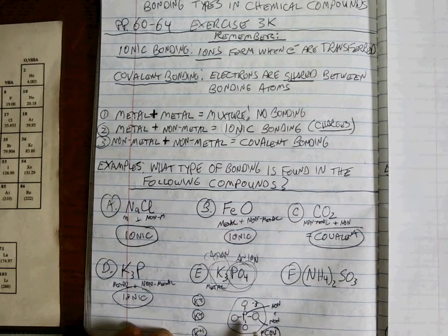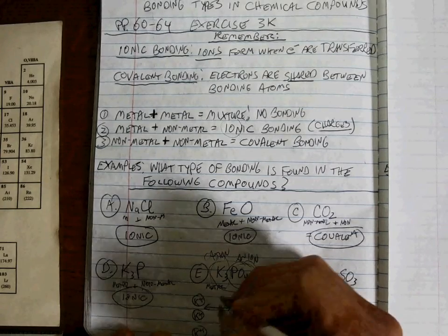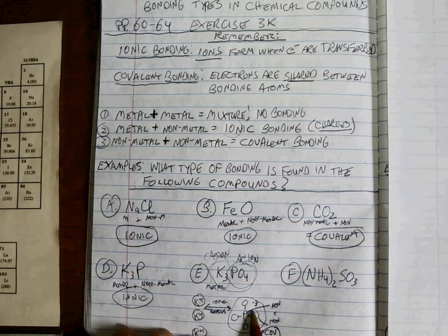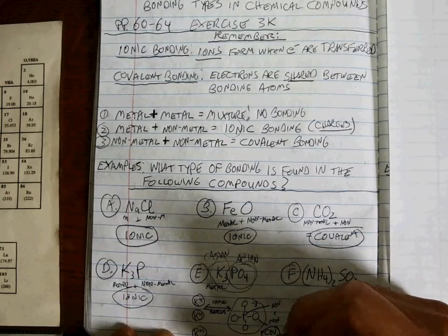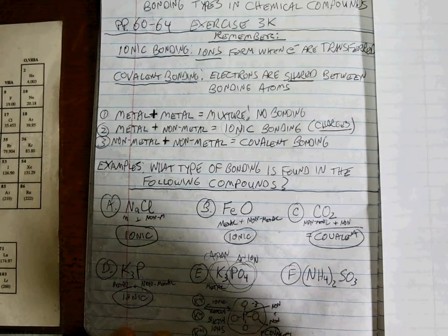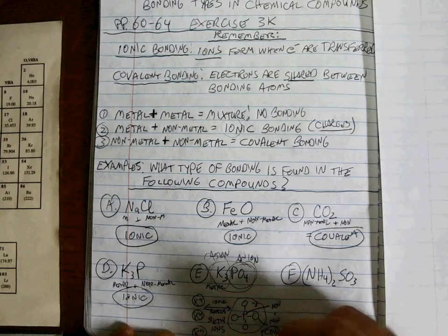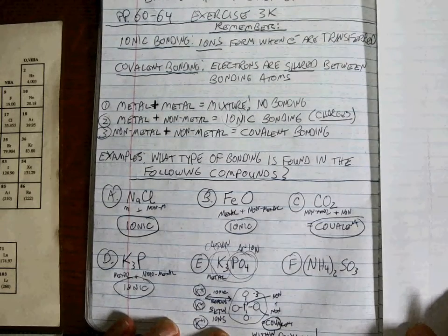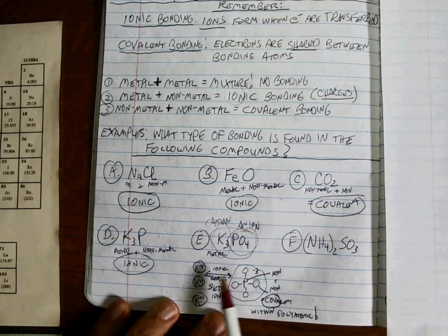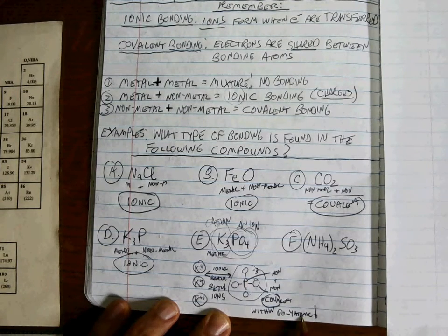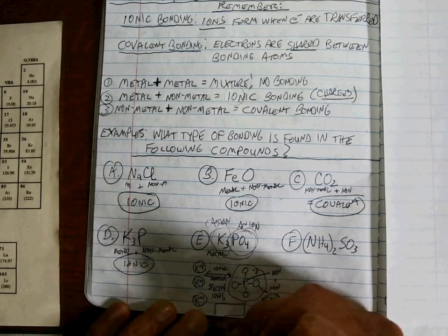There's covalent bonding within the polyatomic ion, but there are also ions involved. So the way we think about this: there's ionic bonding between the cations and the anions, and there's covalent bonding within the polyatomic ion. The answer here is both kinds of bonding.